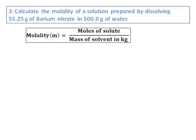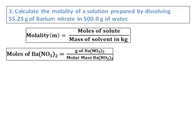Molality is moles of solute divided by mass of solvent in kilograms. Grams of solute is given. Therefore, I need to get the moles of solute, that is barium nitrate.